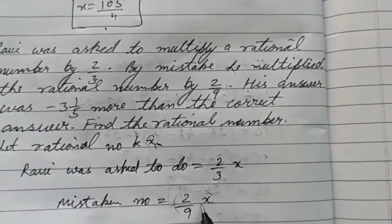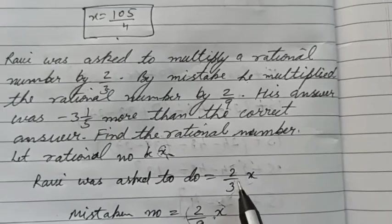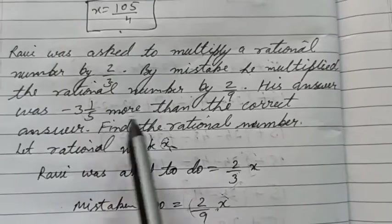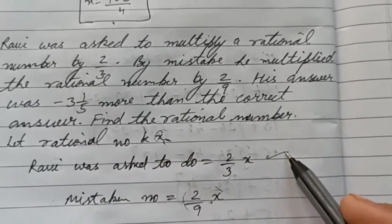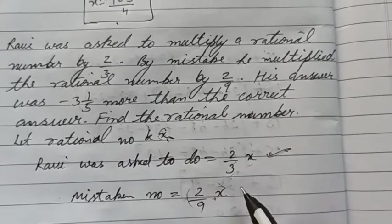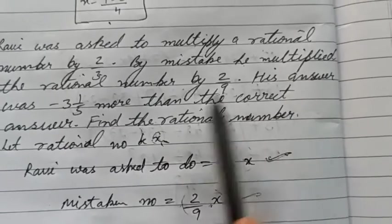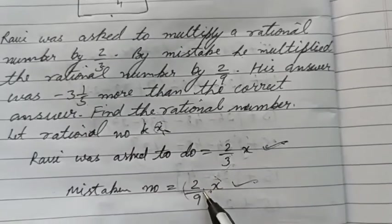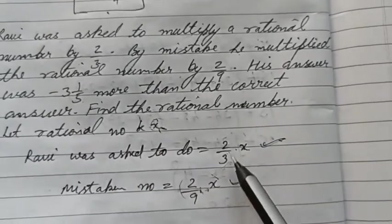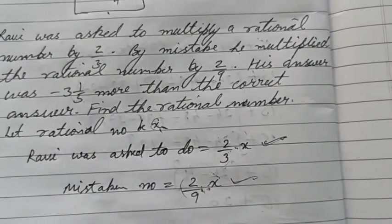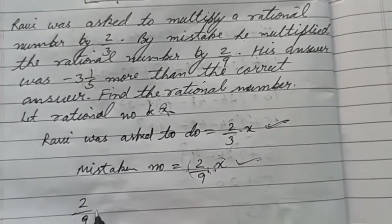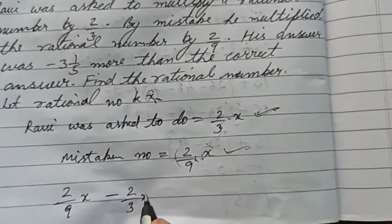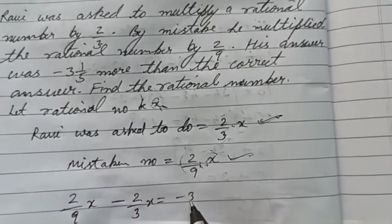This is what he did and this is what he was asked for. His answer was this much more than the correct answer. This was the correct answer, but his answer is more than this. So this minus this equals this much. Ravi's answer minus what was supposed to come, subtracting gives minus 3⅕.